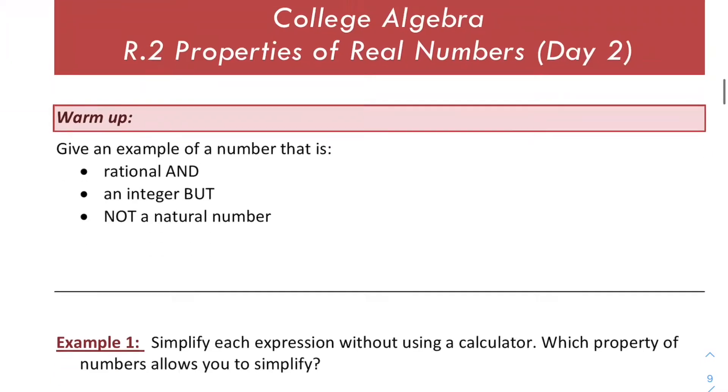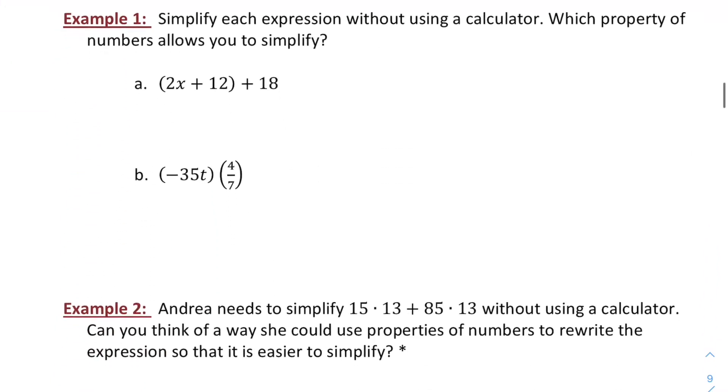We're going to use some of the properties of real numbers that we've discussed to do a little bit of simplifying. First, let's say that we're simplifying this expression without a calculator. We have some like terms. If we did a little bit of regrouping, we could add 12 and 18 together to get 2x plus 30.